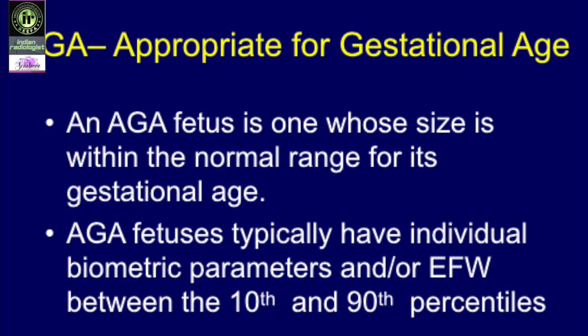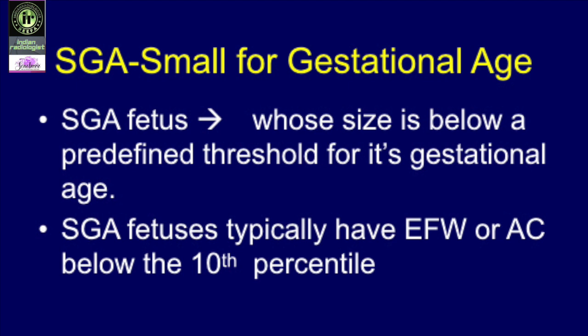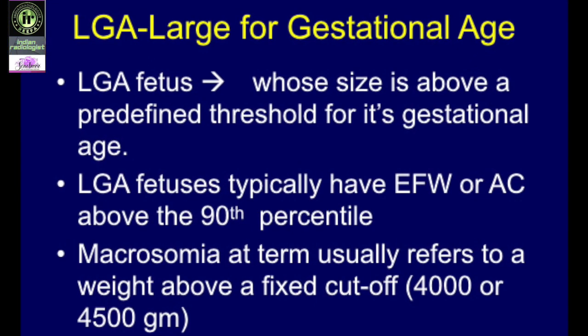The AGA, or appropriate for gestational age, fetus is the one whose size is within the normal range for its gestational age, typically having individual biometric parameters and/or estimated fetal weight between the 10th and 90th percentiles. Small for gestational age is the one whose size is below a predefined normal threshold, with EFW or AC below the 10th percentile. Here, BPD and FL are not considered — only EFW and AC. Either one can be abnormal; both do not need to be abnormal. The LGA, large for gestational age, fetus has EFW or AC above the 90th percentile.